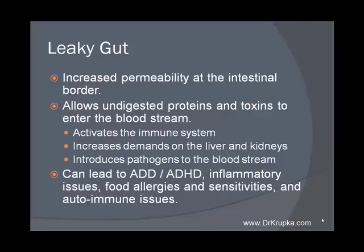Leaky gut — increased permeability at the intestinal border. The border of your intestinal tract is what separates basically your stool from your blood. Its job is to allow nutrients in but keep all the bad stuff out, so it has to be what we call a semi-permeable membrane. If that becomes too permeable, you start letting all the trash straight into your bloodstream. It can allow undigested proteins and toxins to enter the bloodstream, which activates the immune system — and nearly 75% of your immune system surrounds the digestive tract.